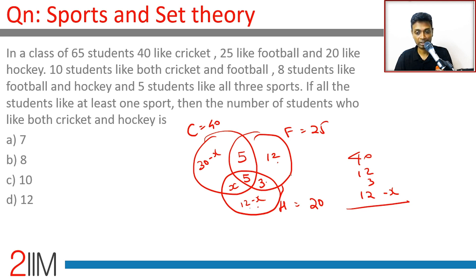15, 27 minus x, plus 40. 52, 55. 67 minus x is equal to 65, or x is 2. This number is 2.